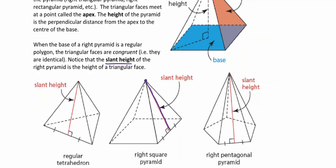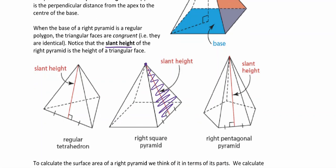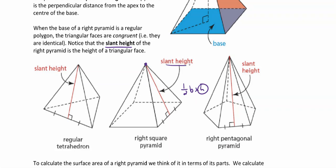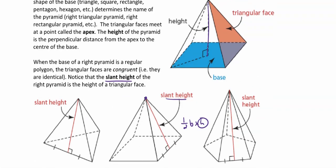The slant height is the line that goes from the apex down to the middle of the base edge of a triangular face. It's valuable because when we find the surface area, the slant height is the height we need for each triangle. The area of a triangle is one-half base times height, and the height in this case is our slant height — not the overall height of the pyramid.